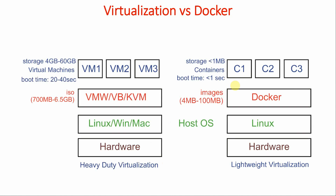Now what are the other differences? The earlier virtualization — like VMware or VirtualBox — we call heavy duty virtualization, and when we use Docker, we call it lightweight virtualization. In both cases we need hardware. In heavy duty virtualization, we can use Linux, Windows, or Mac as the host OS, then install VMware Workstation, VirtualBox, or KVM. Then using ISOs we create VMs. The size of an ISO ranges from 700 MB to 6.5 GB.